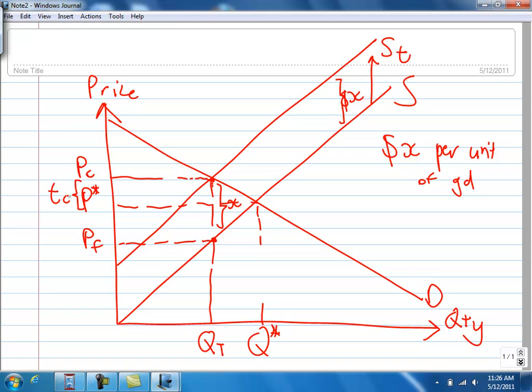This is the specific tax that is imposed, that the consumers are responsible to pay for. And the same way, the specific tax that the firms are responsible for is the difference between P star and PF. So, the distance between these two, TF, is the specific tax incidence that the firms are responsible for.